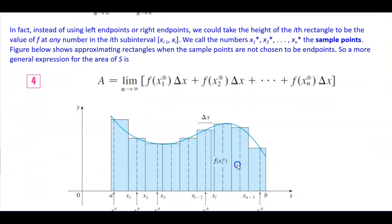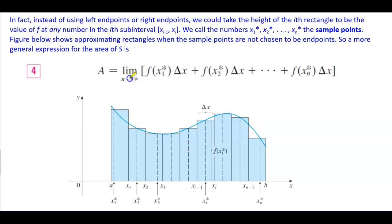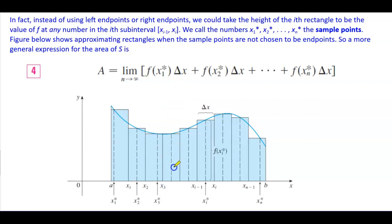The figure below shows the approximating rectangles when the sample points are not chosen to be endpoints. A more general expression for the area of S is: A equals the limit as n approaches infinity of f(x subscript 1*)·Δx, and so on. You can see that these sample points lie somewhere in the middle of each particular rectangle.